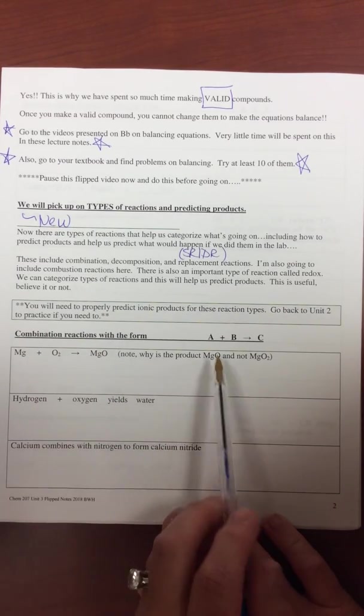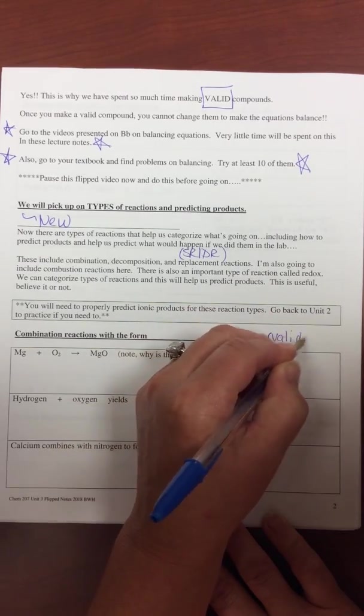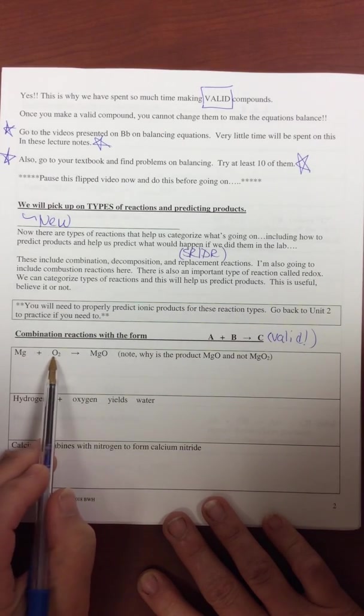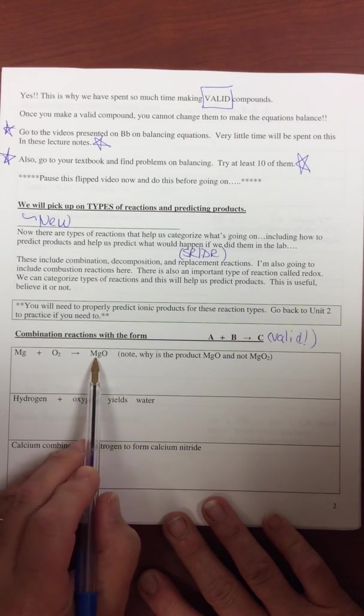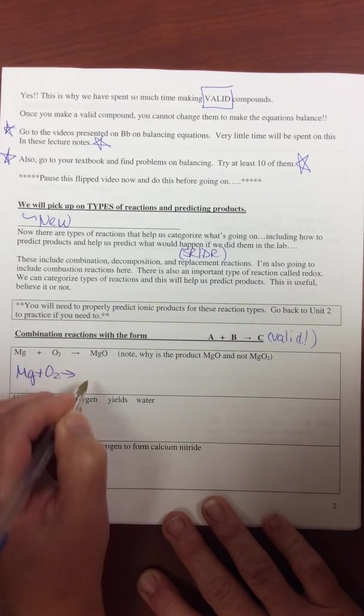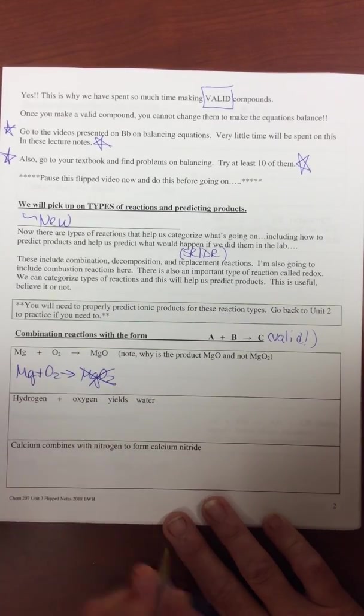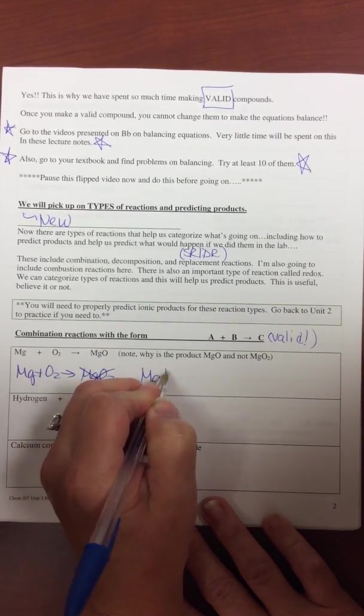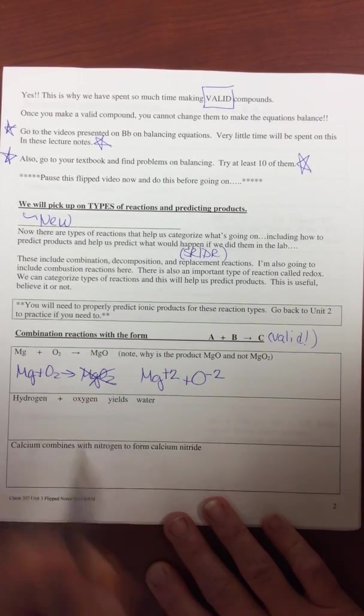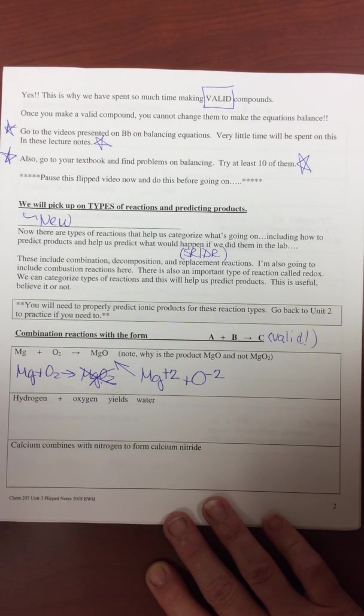Okay, so combination, we'll take an A and a B and combine it into a valid C. So for example, Mg plus O2 will combine to MgO. You cannot just combine them like this. And the reason for that is that Mg forms a +2 and Oxygen forms a -2. So this is not valid. This is.